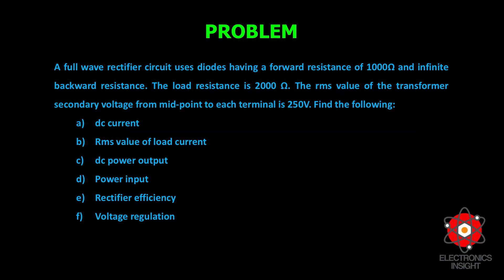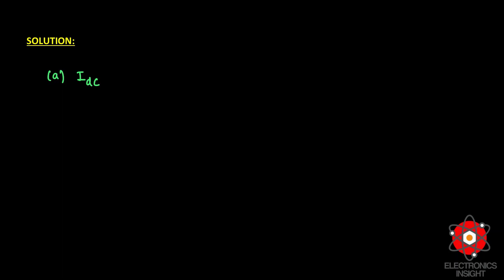First, we begin with the estimation of DC current. For a center tapped full wave rectifier, I_dc equals 2·I_m divided by π, which is twice that of the half wave value. We know that I_m equals E_m divided by (R_f + R_L), so substituting that, I_dc equals 2·E_m divided by π·(R_f + R_L). We are given the diode's forward resistance and the load resistance.